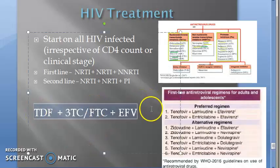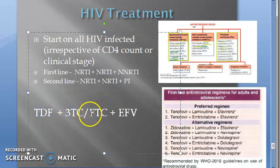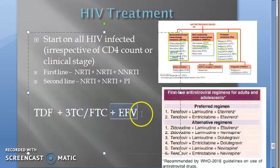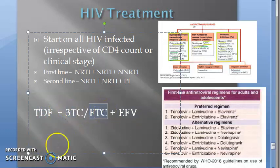If you write this in exam, it's very good. TDF plus 3TC slash FTC plus EFV — that is tenofovir plus lamivudine or emtricitabine. This emtricitabine starts with F; don't ask why lamivudine starts with 3 — strange. EFV is efavirenz. Tenofovir has no D — God knows why they put a D here. 3TC is lamivudine, FTC is emtricitabine, EFV is efavirenz.